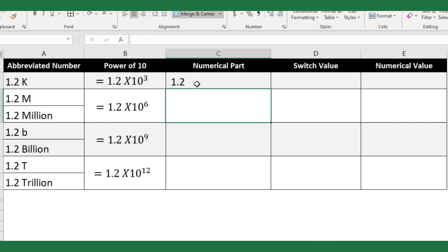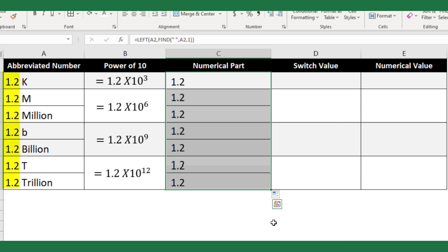Now you can extract only the number before the first space character. Copy down the formula. Now you can see the formula has extracted only the numerical part of the abbreviated number.